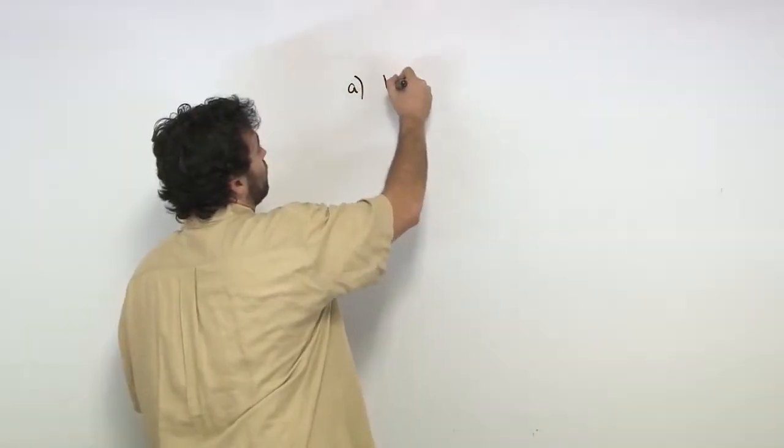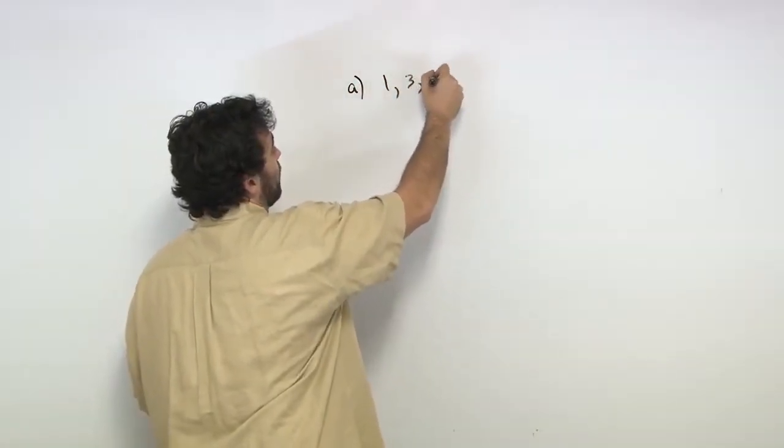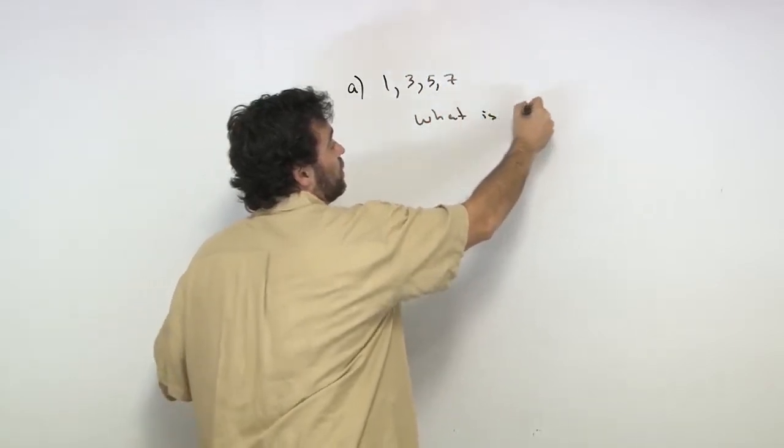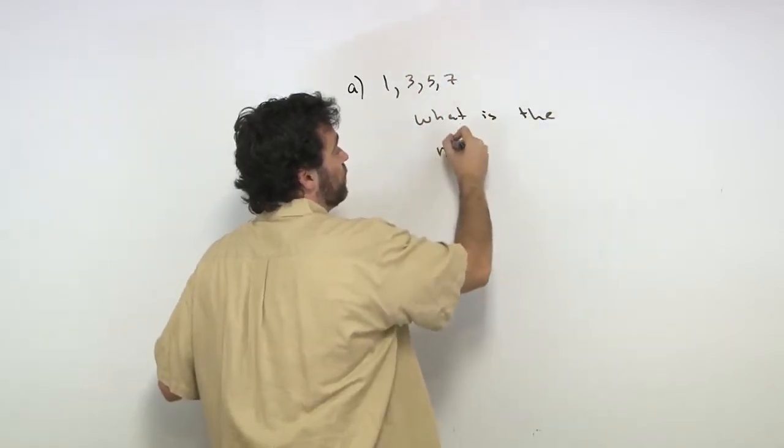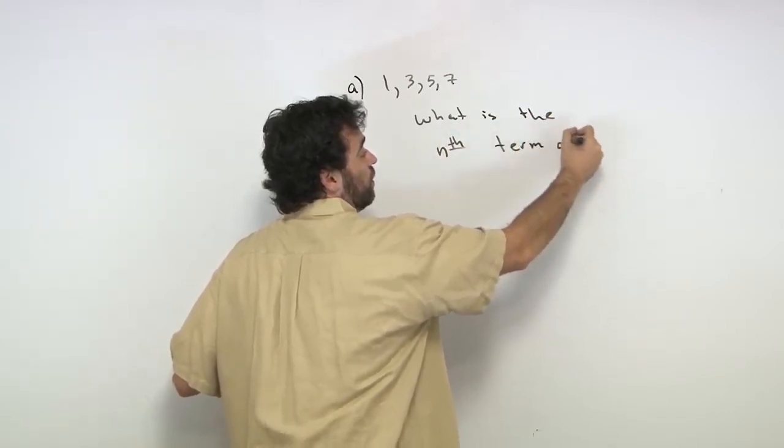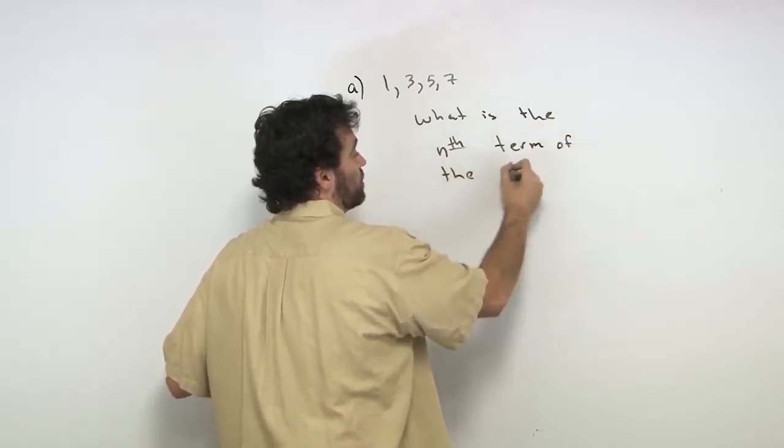And we say A, 1, 3, 5, and 7. What is the nth term of the sequence?